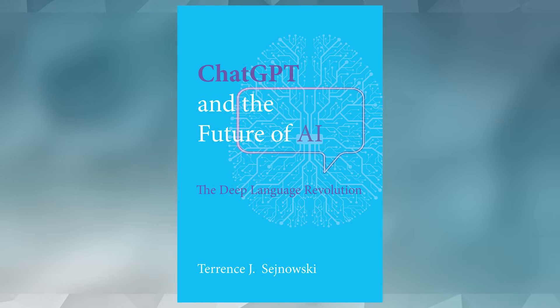Welcome to Closer to Truth. I'm speaking with neuroscientist Terence Sanowski, author of the vital, timely new book ChatGPT and the Future of AI: The Deep Language Revolution. Terry, a foundational theme of your important new book is the convergence of neurobiology and AI, which is accelerating both the advances in AI and our understanding of the brain. I'd like to start with your own research over the last decade, specifically since the last time we talked two decades ago, with your research in neural networks and computational neuroscience.